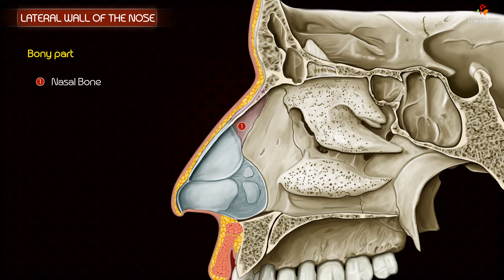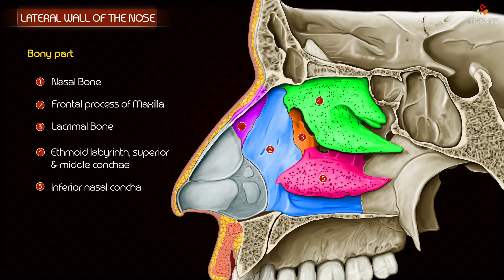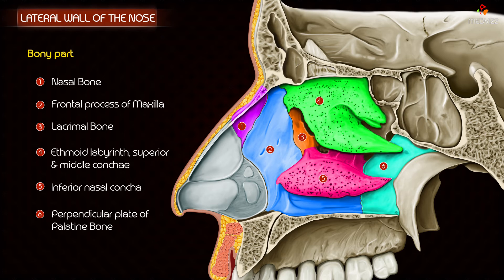The bony part is formed by: the nasal bone, the frontal process of the maxilla, the lacrimal bone, the labyrinth of the ethmoid along with the superior and middle conchae, the inferior nasal concha which is made up of spongy bone only, and the perpendicular plate of the palatine bone together with its orbital and sphenoidal processes.